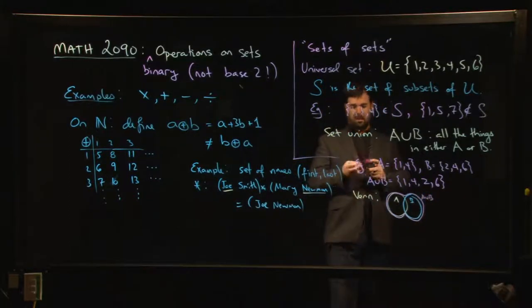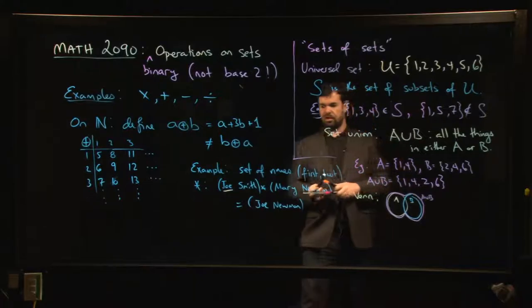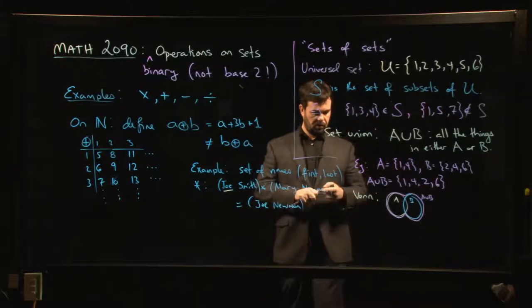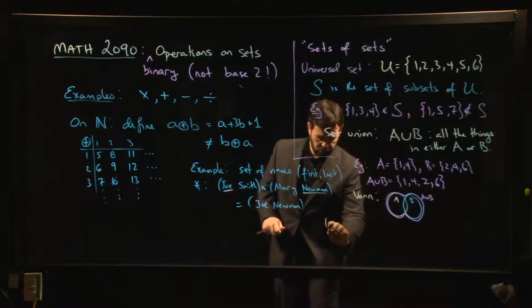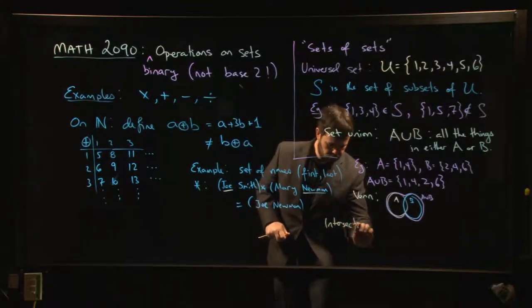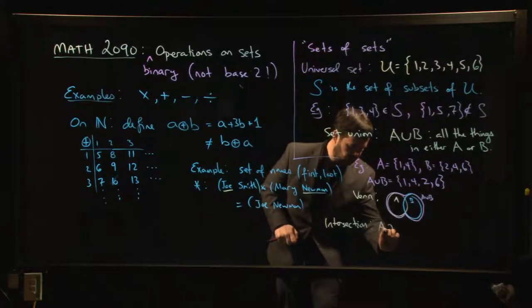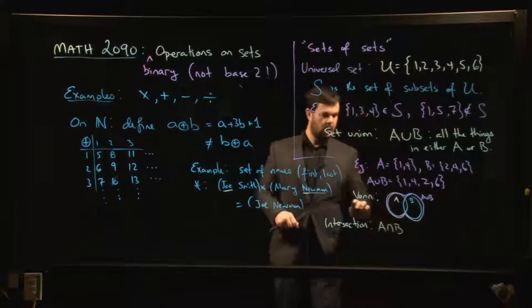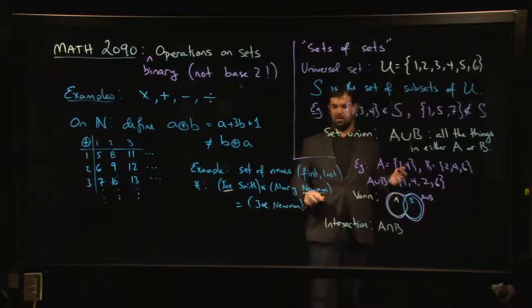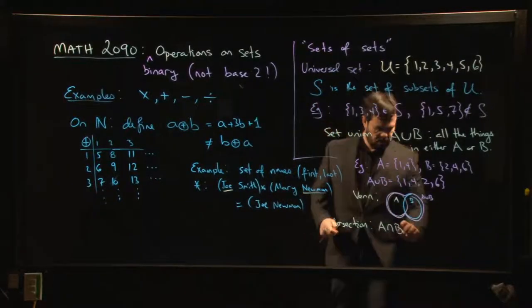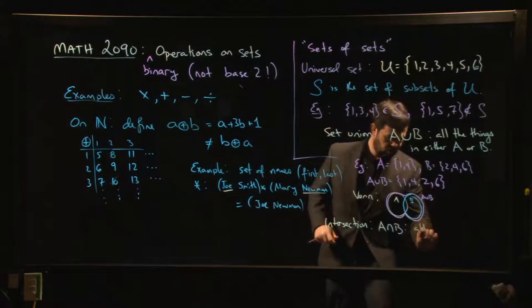The other operation that you can do is there's also something called an intersection. So the intersection is written this way - a sort of upside-down U. You read this as A intersect B, and this is all the things that are common to both.